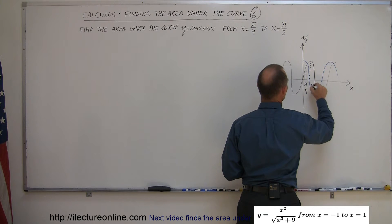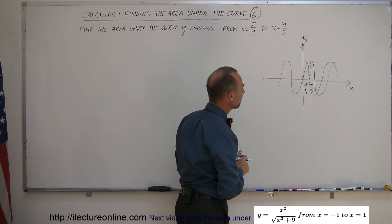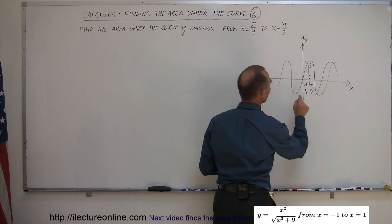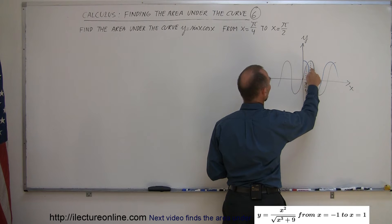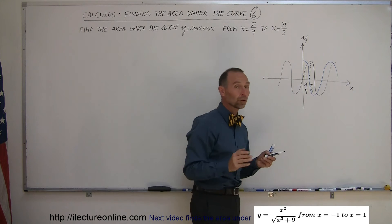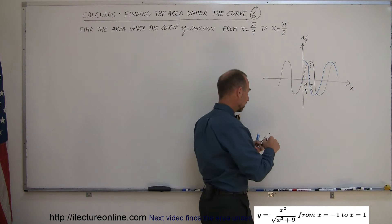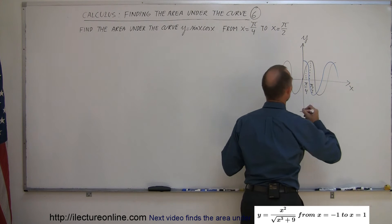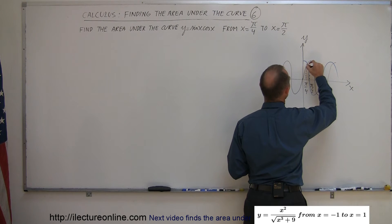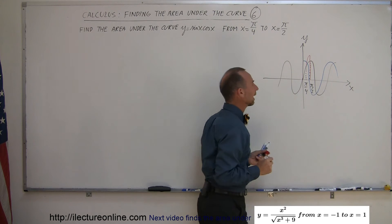Pi over 2. Maybe I should have made it a little bit wider, might have made it easier to see. But at least what we can see is that both functions, both the sine of x and the cosine of x, are either 0 or positive between the values of pi over 4 and pi over 2. So you know that the product between the two will also be positive. And so you can see that the product of the two will probably be something that looks like this. So the product looks like maybe something like that.